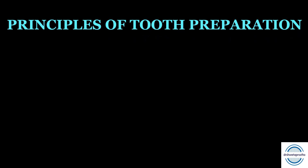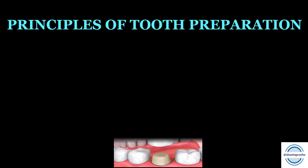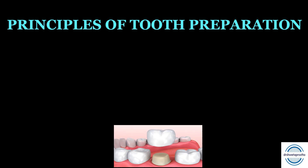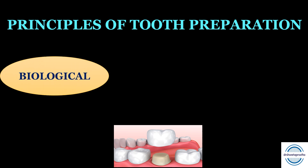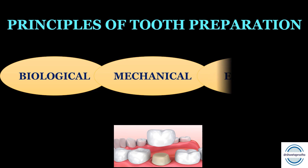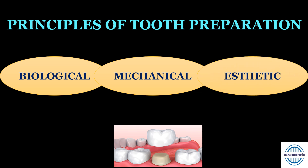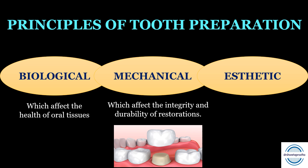So, what is a tooth preparation? It is a systematic and organized approach or method to prepare the tooth so that it receives a restoration or crown. These principles can be categorized into three categories: first, the biological principles; second, the mechanical principles; and third, the aesthetic principles. The biological principles affect the health of the oral tissues, mechanical principles affect the integrity and durability of the restoration, and aesthetic principles affect the appearance of the restoration. In this video we will be discussing the biological principles in detail.